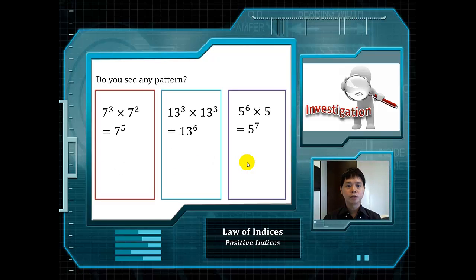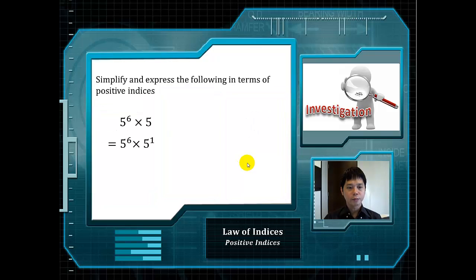Looking at the previous examples, do you see any pattern? Let me give you a hint — look at the powers and the answers. Looking at the previous example, we can write 5 as 5 to the power of 1. And hence, we can simply add up the powers and we will get 5 to the power of 7.